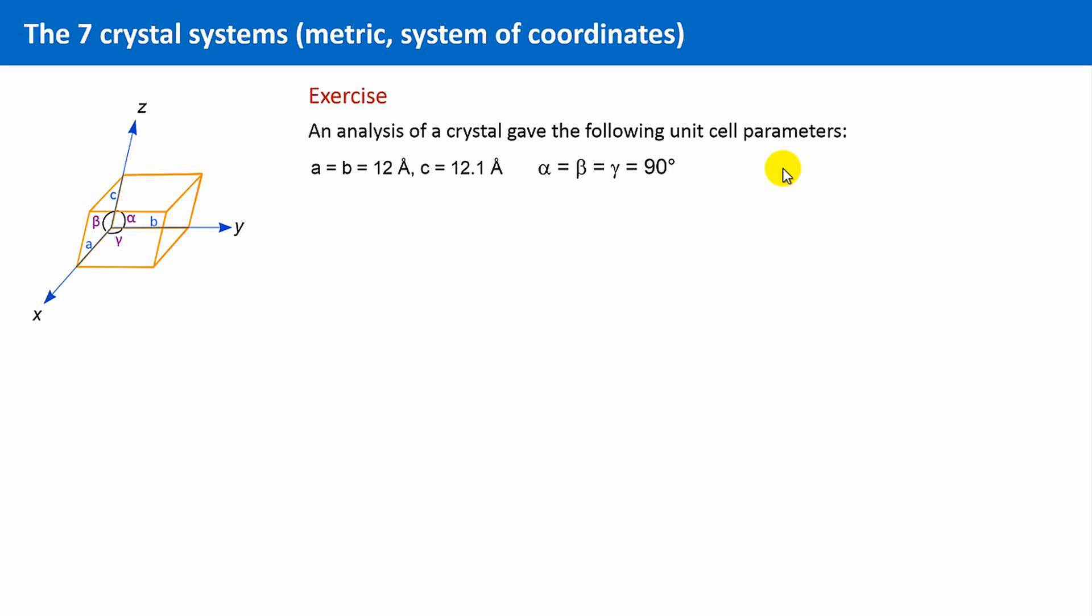An analysis of a crystal gave the following unit cell parameters. A equals B equals 12 angstroms, and C is 12.1 angstroms, and all angles are 90 degrees.